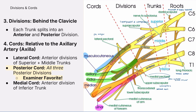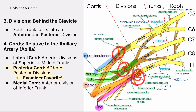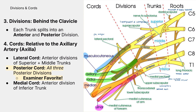Behind the clavicle, each trunk divides into anterior and posterior divisions. These six divisions then rearrange in the axilla to form the three cords, named for their position relative to the axillary artery: lateral, medial, and posterior. Out of these three, the posterior cord loves to be asked, but you should really know all three.